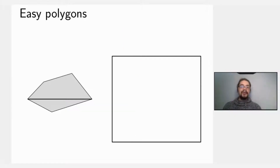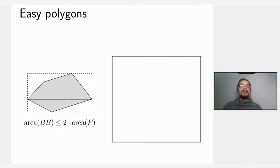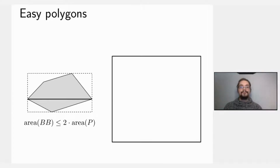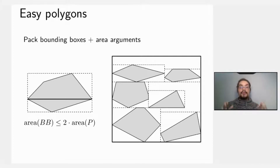For easy polygons, we place them in their bounding boxes and observe that the bounding box has at most double the area of the original polygon. We pretend the polygons are their bounding boxes, pack those, and use area arguments to show the solution is not too bad. This yields a constant approximation algorithm in polynomial time for easy polygons.